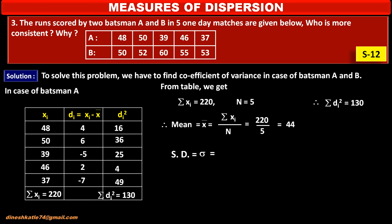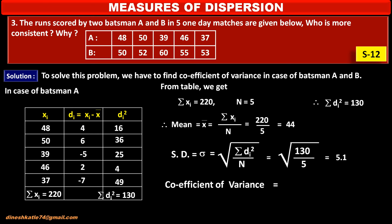Standard deviation sigma equals the square root of (summation di squared upon n), which equals the square root of (130 upon 5), which equals 5.1. Therefore, the coefficient of variance equals sigma upon x̄ times 100, which is 5.1 upon 44 times 100, which equals 11.59.